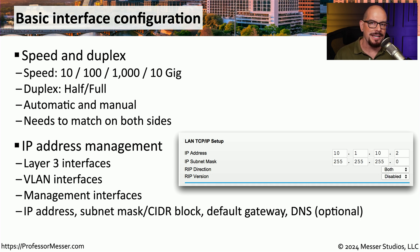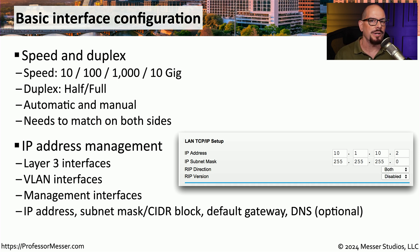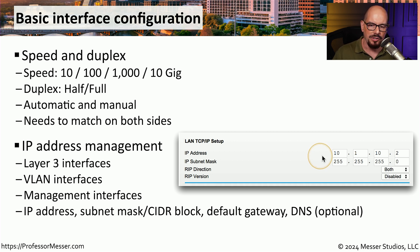If this configuration doesn't match what we've been given — let's say we've used a different default gateway IP address, or put in the incorrect subnet mask — then we may find that we're not able to connect to other IP devices on this network. Fortunately, this is a relatively easy configuration to validate. We can simply look at what we've been given and look at what we've configured in the system, and make sure that both of those match.